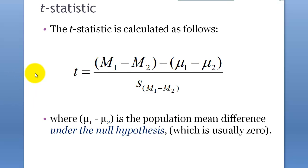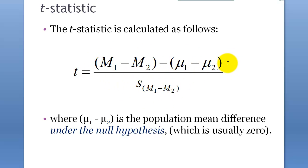The t-statistic is about getting the t value for the difference between two samples. Essentially everything works the same as before, except that what we are dealing with is a difference between two means. If you understand this idea, calculating the t-statistic is pretty straightforward.